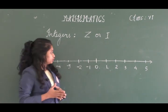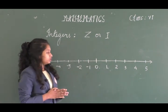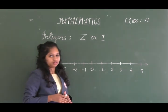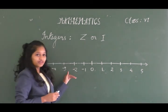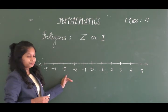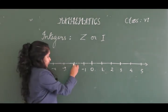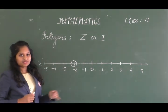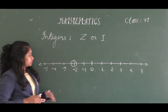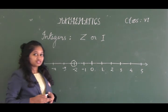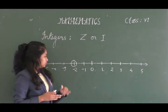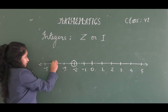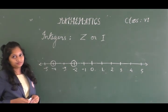To represent some numbers on a number line — for example, to represent minus 2, locate where minus 2 is and mark it. Similarly, for minus 4, find that position and mark that point.